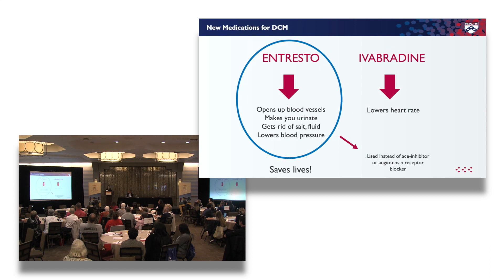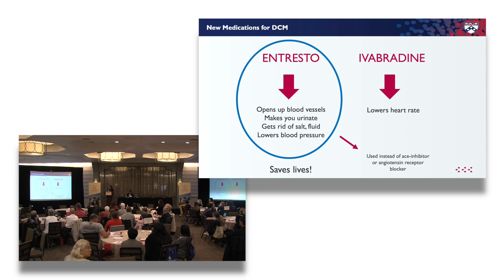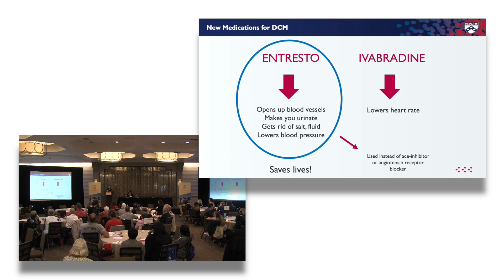There are a couple of new kids on the block that Dr. Kim will address. One is called Entresto — this may be a game changer for patients with dilated forms of cardiomyopathy. It has been shown to improve survival and to make you feel better. It works similarly by opening blood vessels, promoting urination, getting rid of salt and fluid, and lowering blood pressure. It's used instead of an ACE inhibitor or angiotensin receptor blocker because part of the drug already includes an angiotensin receptor blocker. Ivabradine is another medication used in a smaller group of patients, with not as much beneficial effect as we've seen with Entresto.